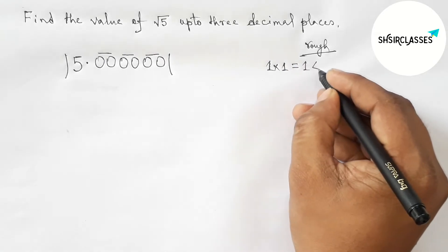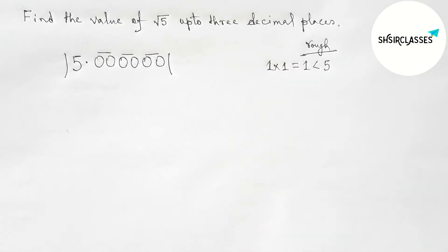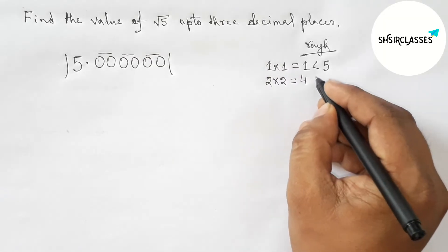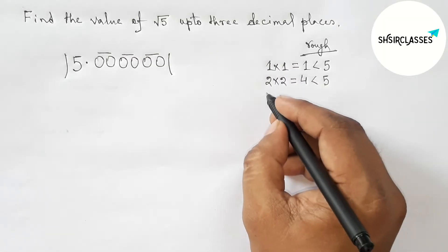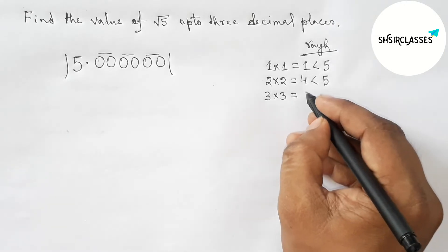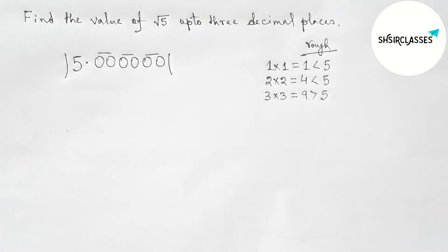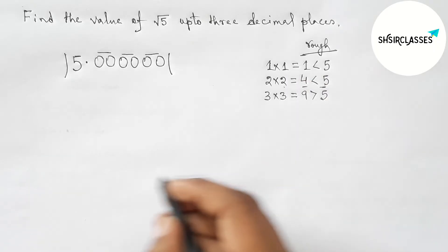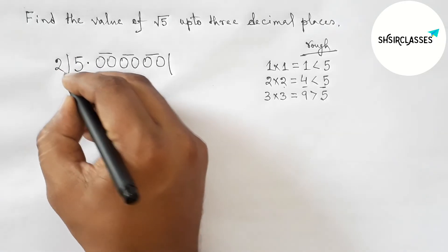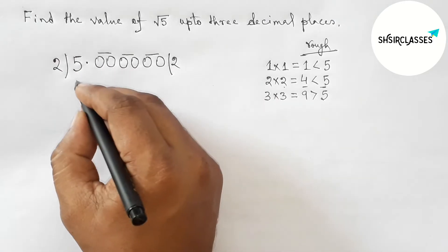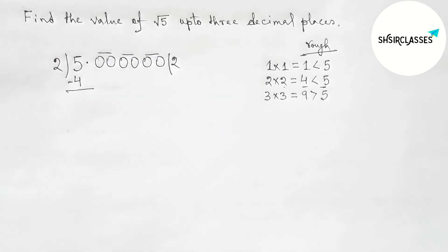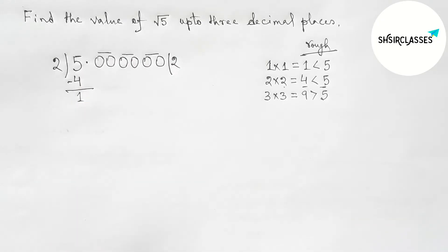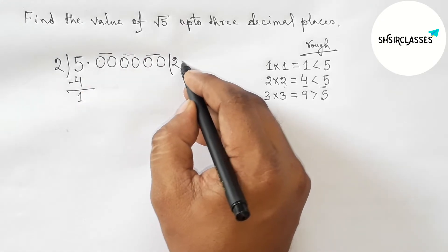First taking 1 and multiplying by 1 — that gives 1, which is less than 5 but not more closer. Taking 2 and multiplying by 2 — that gives 4, which is less than 5 and more closer. Taking 3 gives 9, which is greater than 5. So we take 2, giving 2×2=4. Subtracting, we get 1, and the decimal point shifts here.